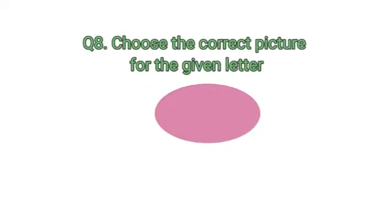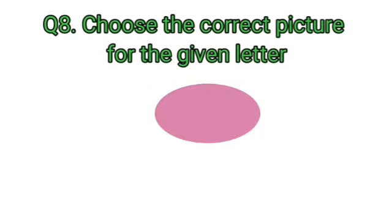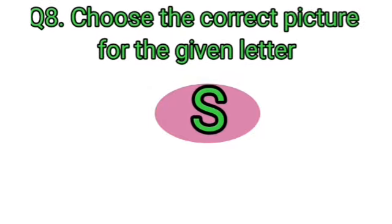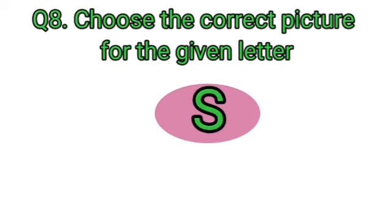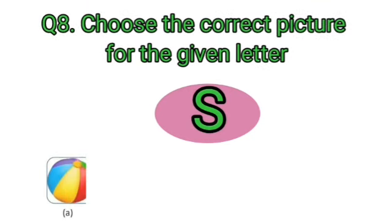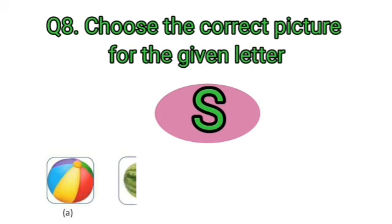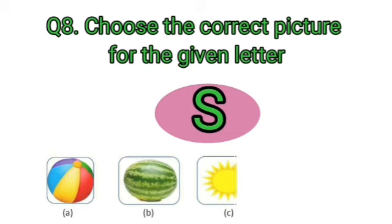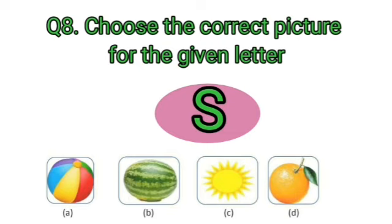Our next question is, choose the correct picture for the given letter S. And the options are, B, Ball, W, Watermelon, S, Sun and O, Orange. Let us check all the options one by one and find the correct picture.